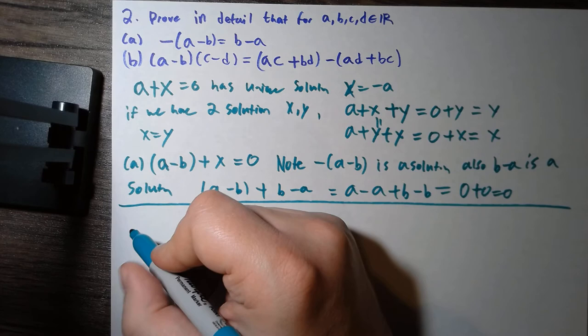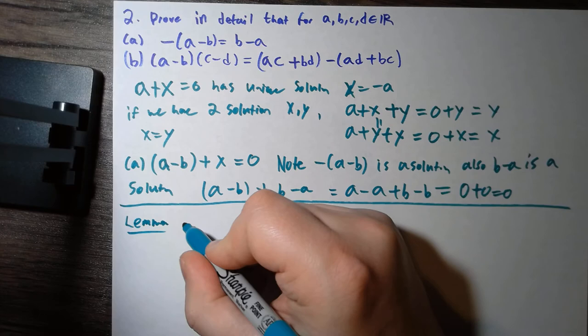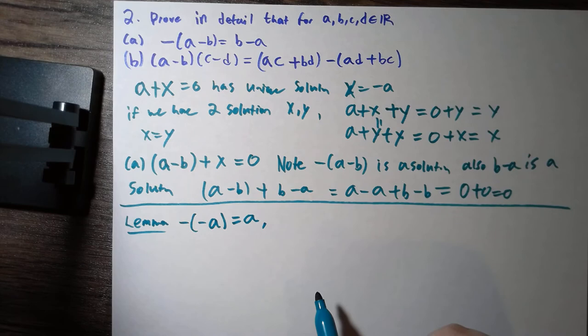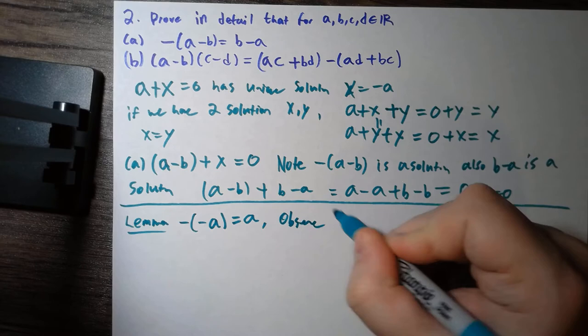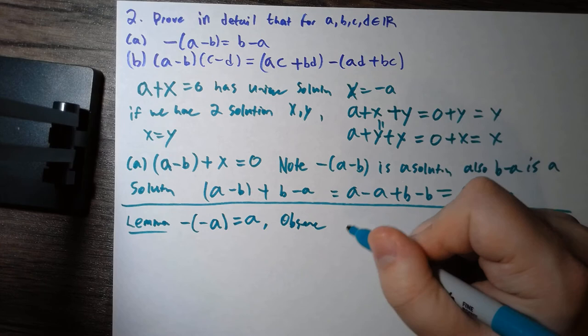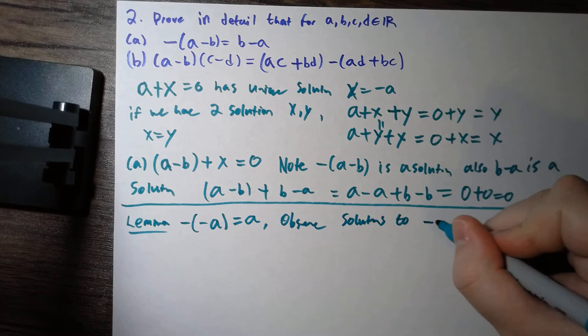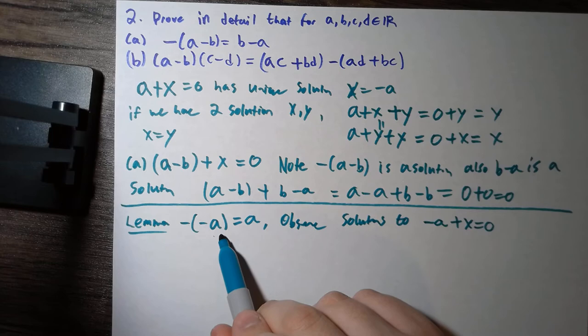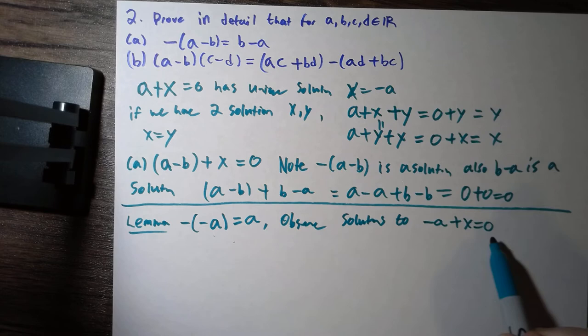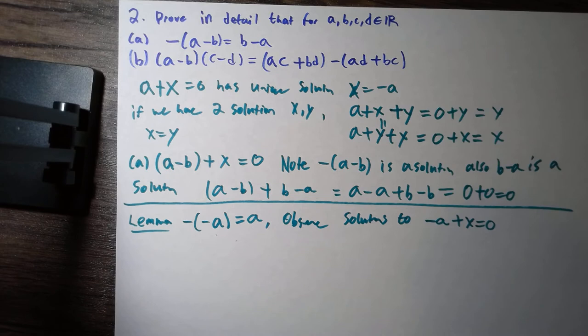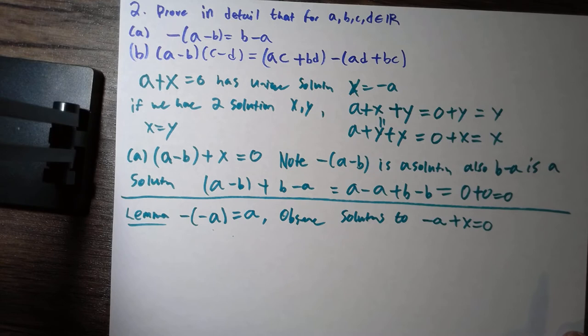To prove part b, let's first prove a similar lemma: that negative negative a equals a. To see this, we can observe that both of these are solutions to the equation negative a plus x equals zero. Negative negative a is a solution just by the definition of what negative means. And a is also a solution, because negative a plus a — switching that around and using the fact that negative a is the inverse of a — gives us what we're looking for.